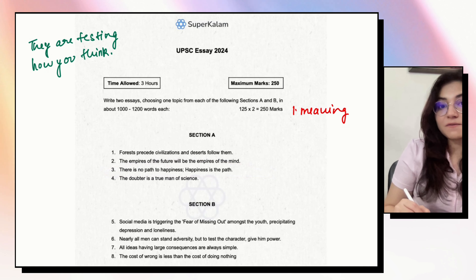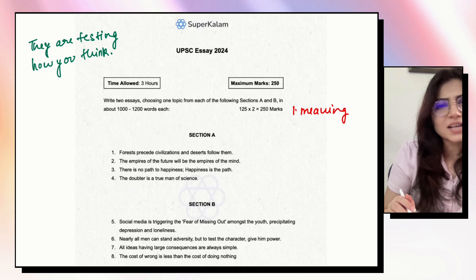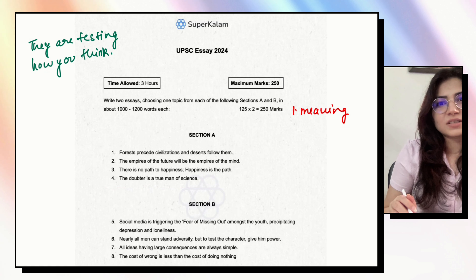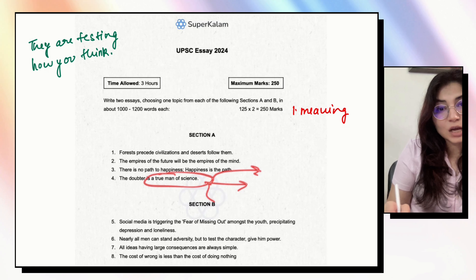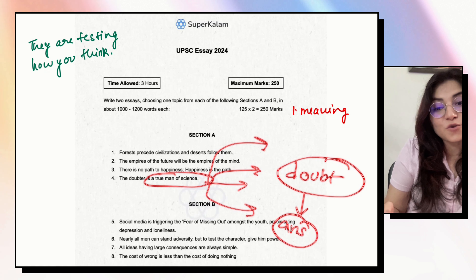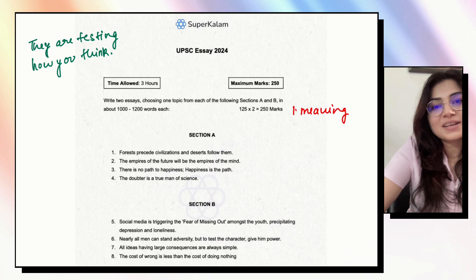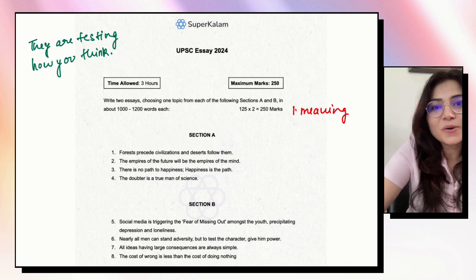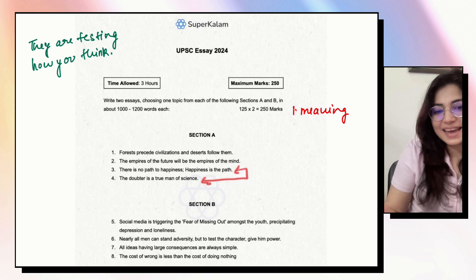The fourth topic is: 'Doubter is the true man of science.' This is a very inquisitive and excellent essay topic. When you doubt, you ask questions; when you ask questions, you research, find evidence, factual proofs. That is a true man of science — logic, rationality, proofs, evidences. These are found only when you question. When you find answers, you discover the deeper truth of the universe. You can give the example of APJ Abdul Kalam here as well.